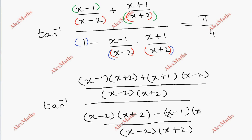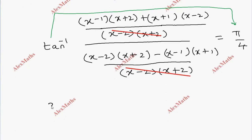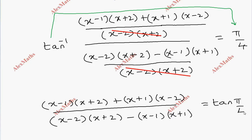x minus 1 into x plus 1 equals pi by 4. We cancel and apply tan inverse. The balance term gives: x plus 2 equal to x plus 1, x minus 2 whole divided by x minus 2 into x plus 2, minus x minus 1 into x plus 1, equal to tan pi by 4. Tan pi by 4, that is tan 45, has value 1.